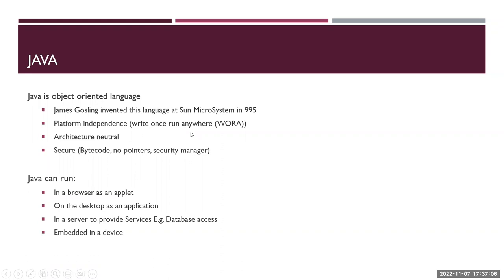There are specific applications which run only on Mac, and there are specific applications which run only on Windows. Some applications run only on Linux, but Java is an application which is architecture neutral, so it can run anywhere. You can take your Mac environment, your Windows, your Linux, or any environment. It can run on any of these environments, and it is highly secure.